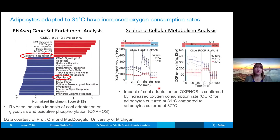If we take a look at the oxygen consumption rate of these cells cultured at 31 degrees Celsius, we can see that the basal background oxygen consumption rate has increased versus cells kept at 37 degrees Celsius. We also see that there's an increased oxidative capacity — their maximal oxygen consumption rate is also much higher than the 37 degrees C cultured cells.